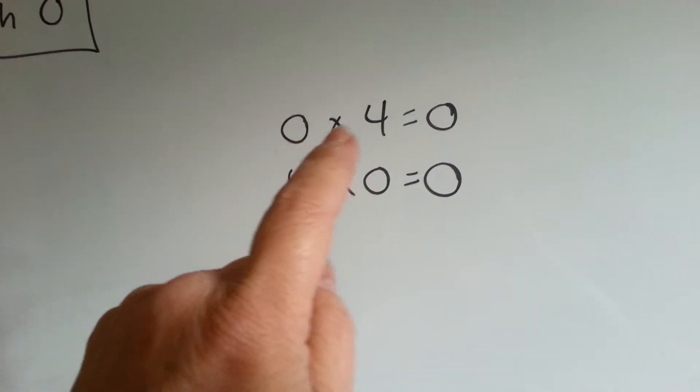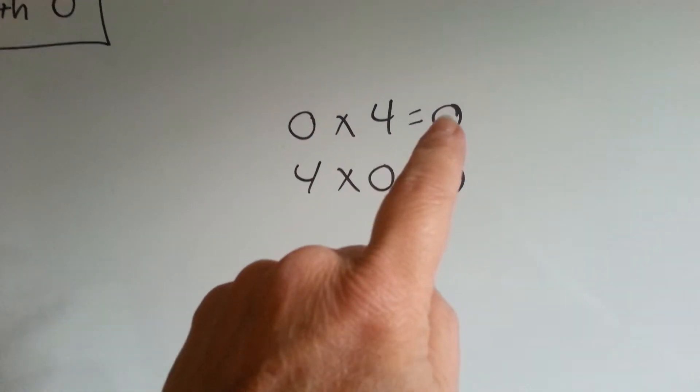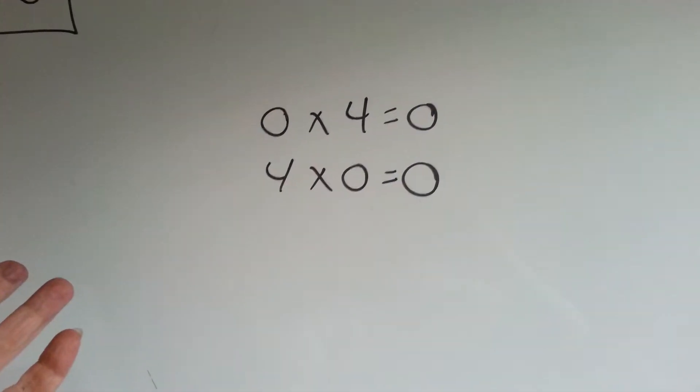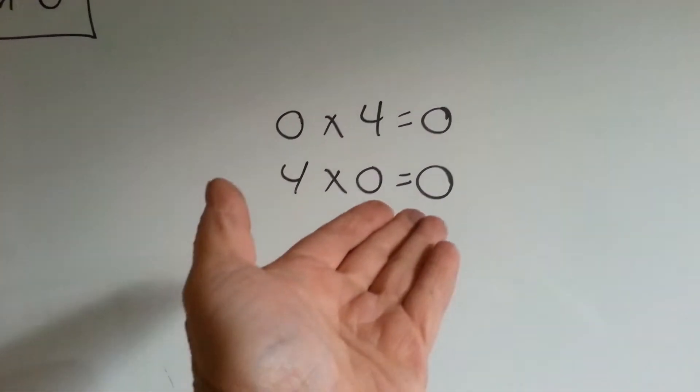If I have 0 4's, I have 0. And if I have 4 0's, 0 plus 0 plus 0 plus 0 is 0.